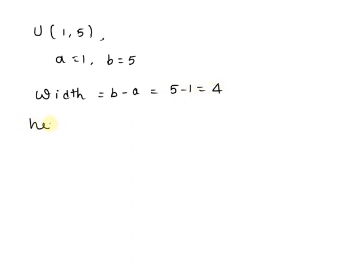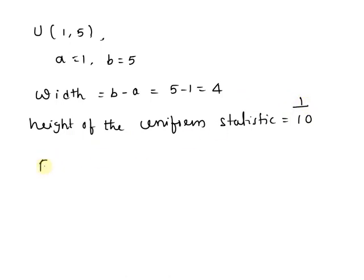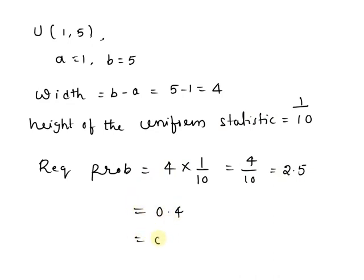The height of the uniform statistic is equal to 1 over 10. The required probability is equal to 4 times 1 over 10, that is equal to 4 over 10, which equals 0.4. Written to three decimal places, this is 0.400.